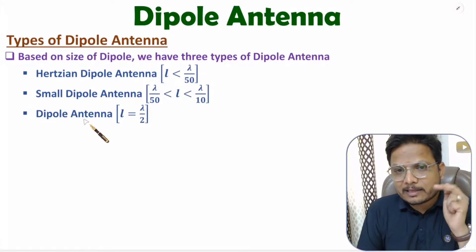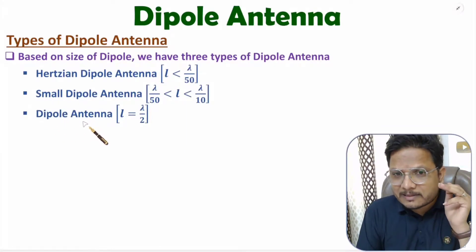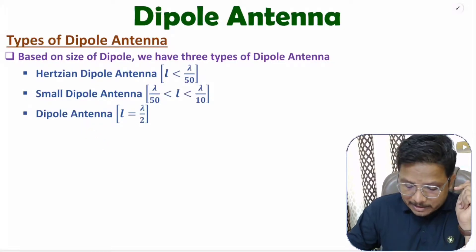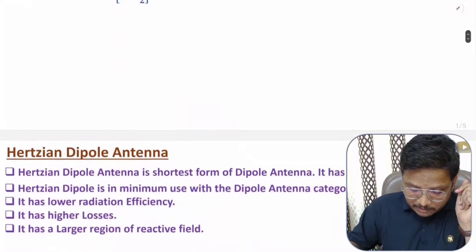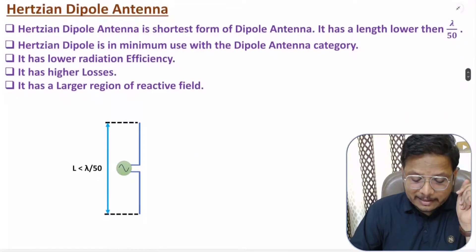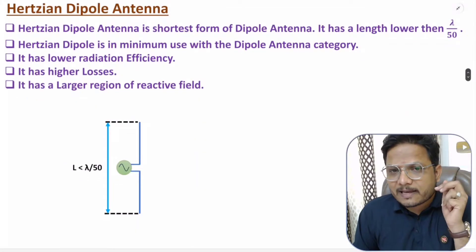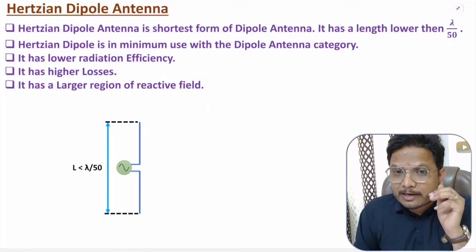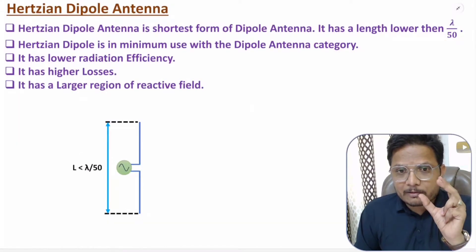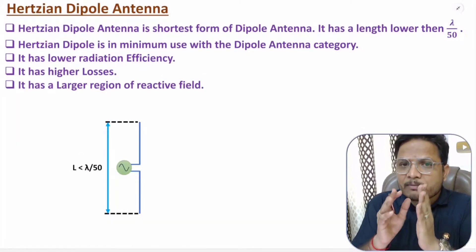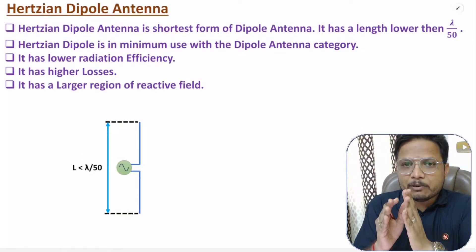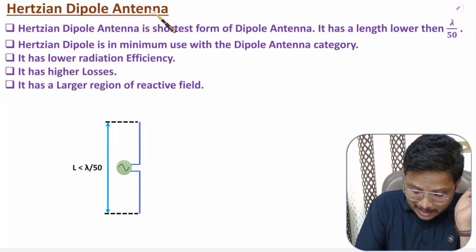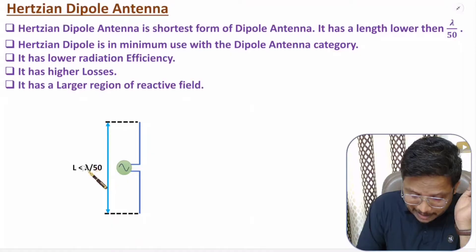In this video, I'll explain these three categories in great clarity. Let me start with the first category, that is the Hertzian dipole. The Hertzian dipole is the shortest form of dipole — its size is very small, lower than lambda by 50.